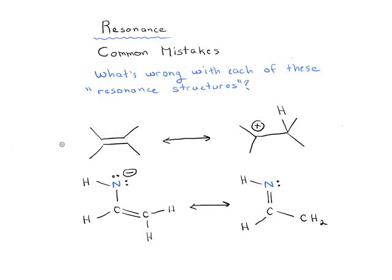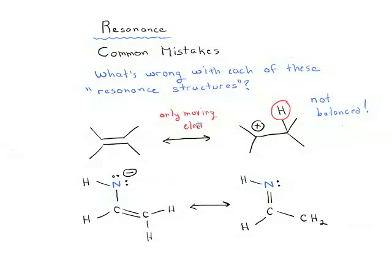Let's go through this top one. We've got this alkene, and it's supposedly in resonance with this product here. What's wrong with the one on the right? Why is this not actually a resonance structure? Notice that this is not a balanced equation — we have a different number of atoms. This hydrogen here has been added out of nowhere. Remember, in resonance we're only moving electrons. We're not adding or subtracting any atoms, so this is not a balanced resonance equation.